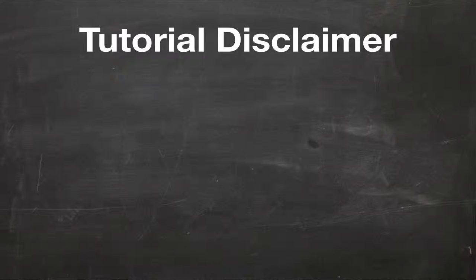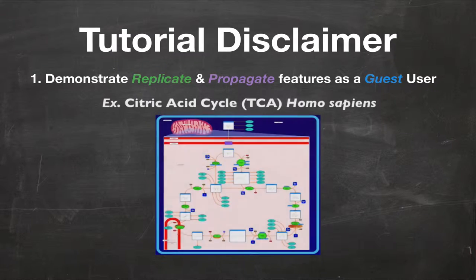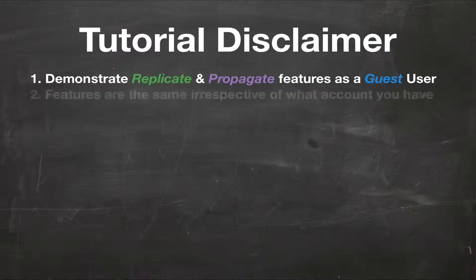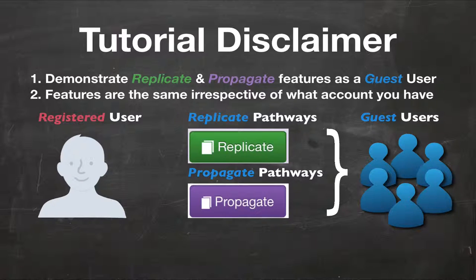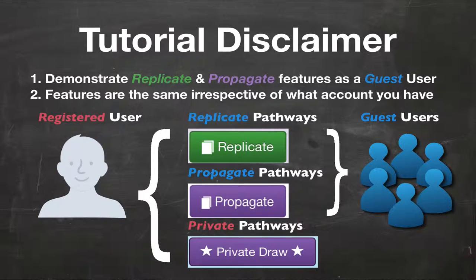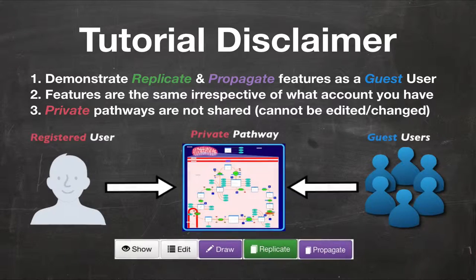For the purposes of this tutorial, I will demonstrate the replicate and propagate features as a guest user using the Citric Acid Cycle, or TCA pathway, as an example. These features can also be accessed by registered users and are the same in use and functionality irrespective of what kind of account you have. The only difference is that registered users can make their PathWiz private. Private PathWiz are not shared on the PathWiz public repository and cannot be altered or edited by anyone other than yourself. Making your PathWiz private is completely up to you and based on your personal preferences.